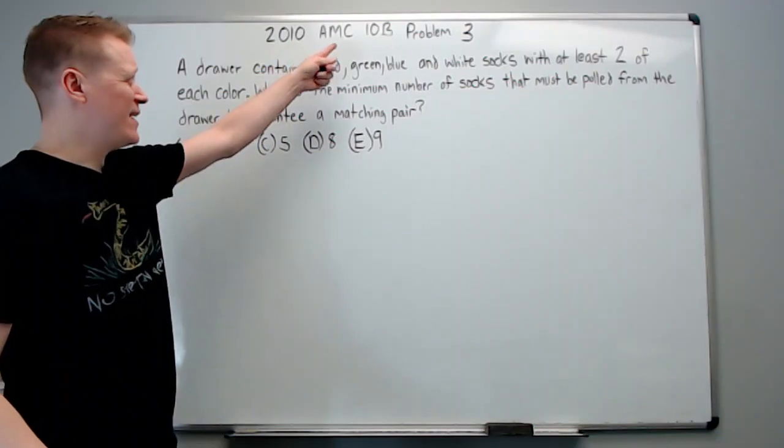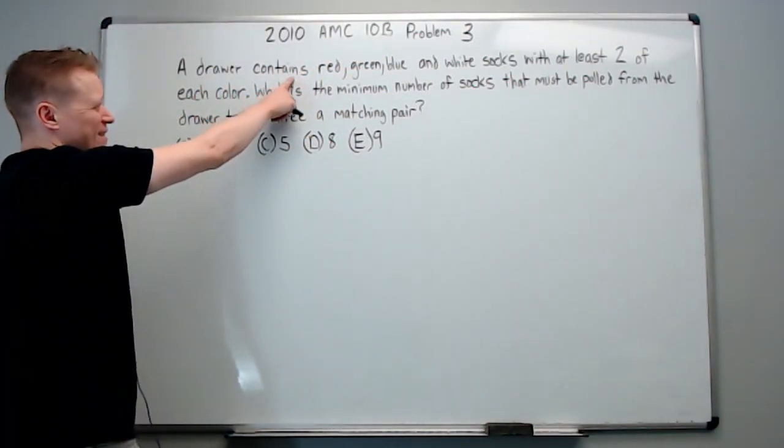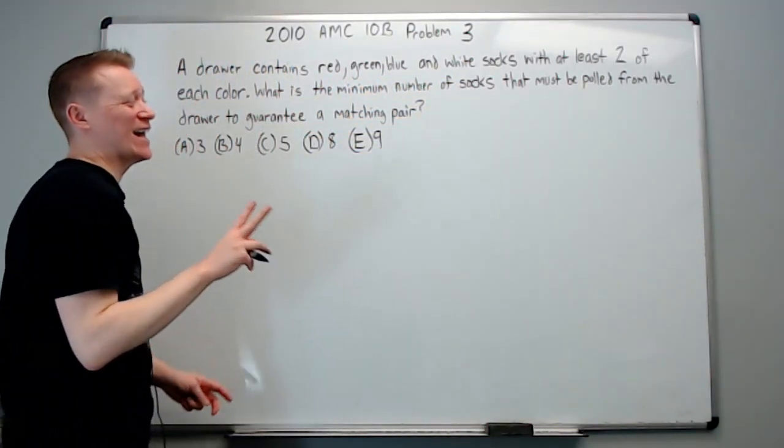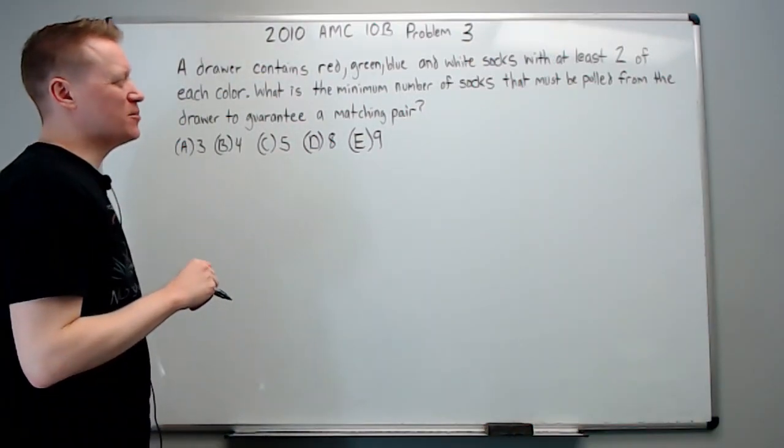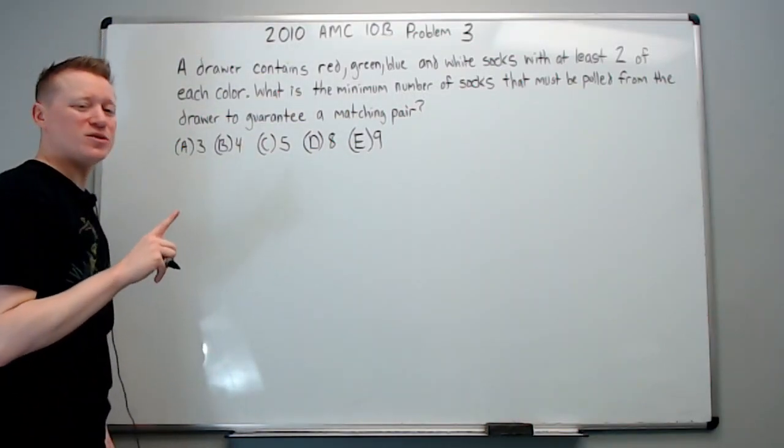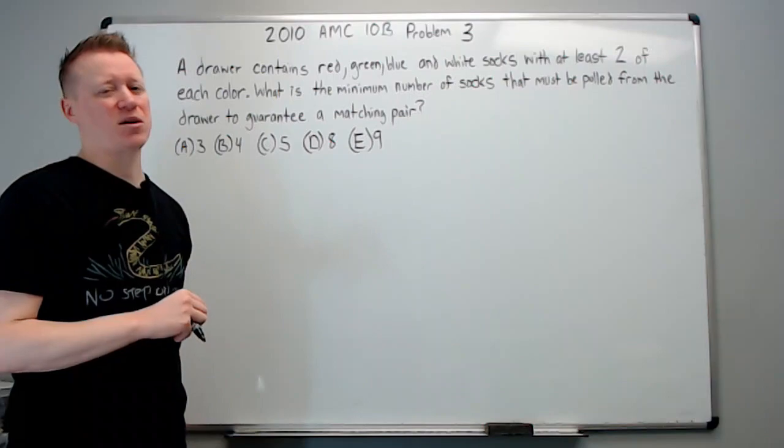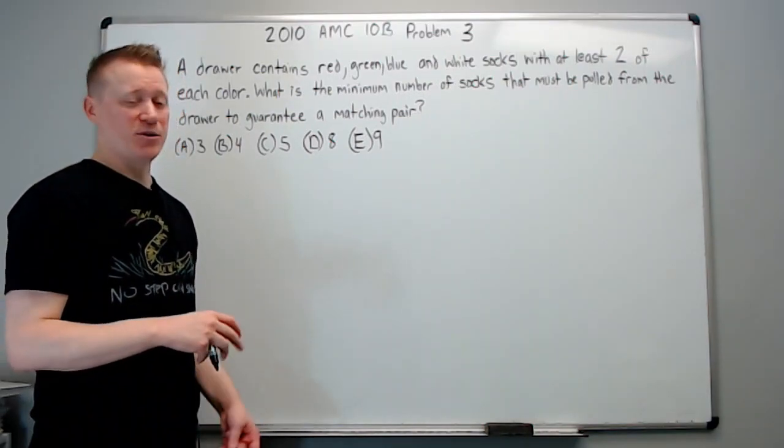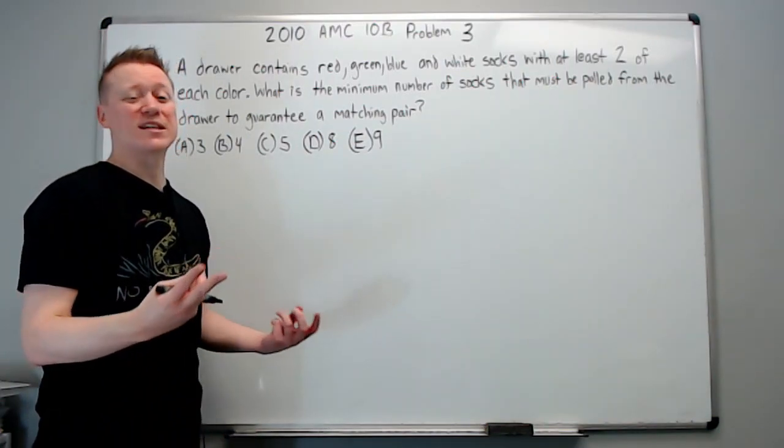Alright, continuing on with the 2010 AMC-10B Problem 3. A drawer contains red, green, blue, and white socks with at least two of each color. What is the minimum number of socks that must be pulled from the drawer to guarantee a matching pair? Now, usually this is called pigeonhole principle. That's what most people call it online. I kind of call it the worst case scenario.